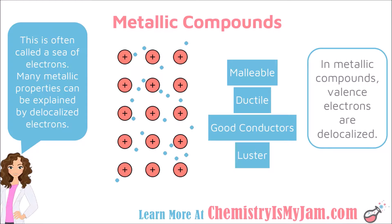Let's finish up our discussion of bonding by talking about metallic compounds. The metallic bond is very different from the ionic and the covalent bond in that the electrons are delocalized. Specifically, the valence electrons have the ability to move freely between all of the atoms present.